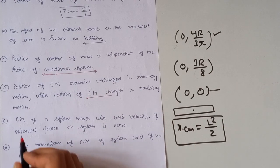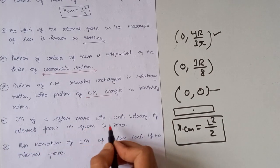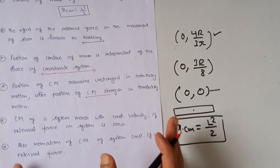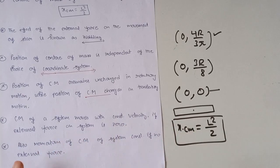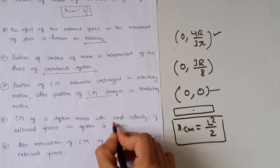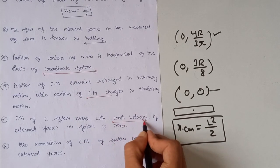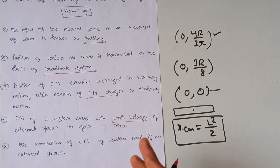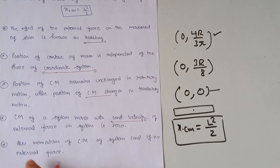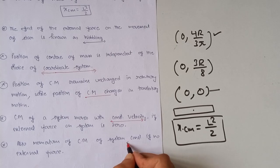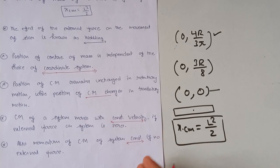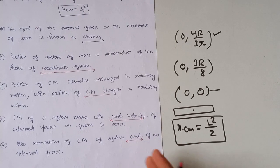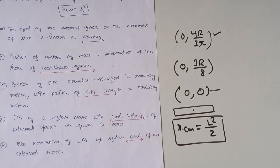The center of mass of the system moves with constant velocity if the external force on the system is zero. Similarly, the momentum of the center of mass of the system is constant if no external force acts on it.